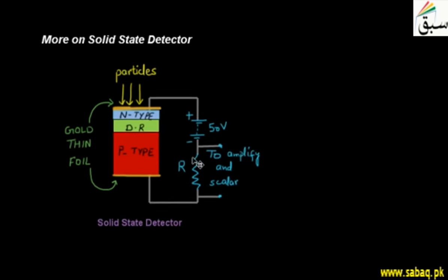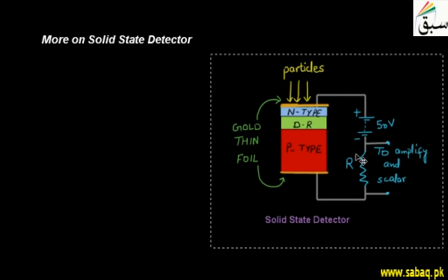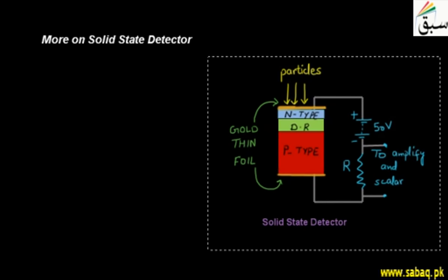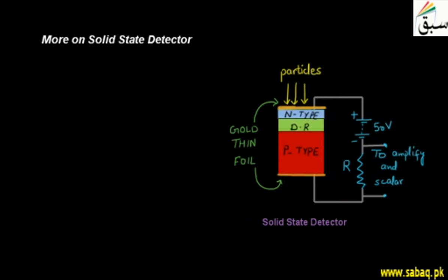Students, welcome to this lecture. We were discussing the solid state detector, so we will continue the discussion in this lecture. We have a setup where we have a solid state detector — a p-n junction. This p-n junction is reverse biased: the p-type region is joined by the negative terminal and the n-type region is connected to the positive terminal.